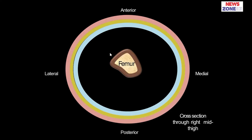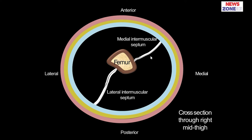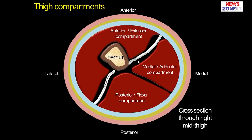This is the femur, which is present at the mid portion of the thigh. You can see there are two septa arising from the femur and going to the deep fascia. These are called the intramuscular septa — medial intramuscular septum and the lateral intramuscular septum. You can see that in between the medial and the lateral intramuscular septum there are actually three compartments. The medial and lateral intramuscular septum divide the anterior or extensor compartment from the medial or adductor compartment and also from the posterior or flexor compartment.